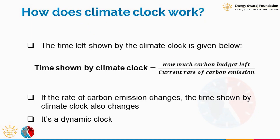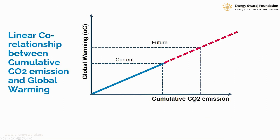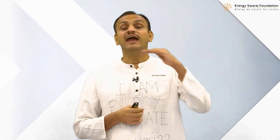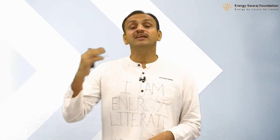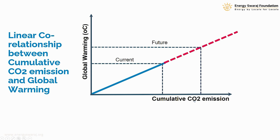The derivation is based on a simple linear co-relationship. On the x-axis we plot cumulative carbon dioxide — total CO₂ present in the atmosphere, given in ppm (parts per million). On the y-axis we plot global warming. What we have seen is a linear co-relationship, so at any given point we know the current CO₂ concentration and current global warming, and can estimate future temperature from this curve.